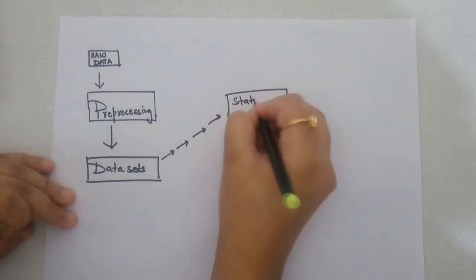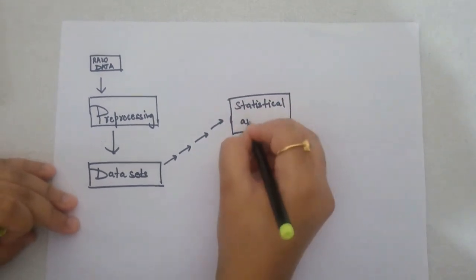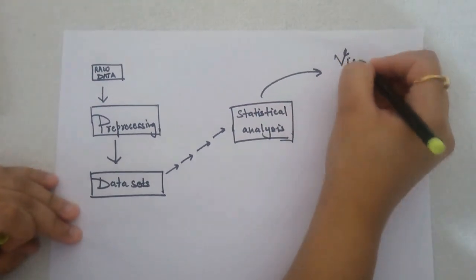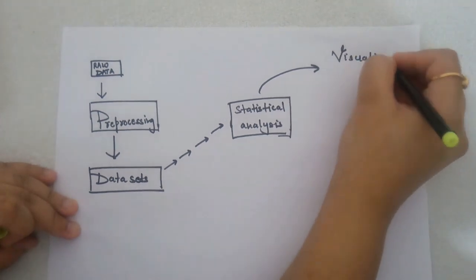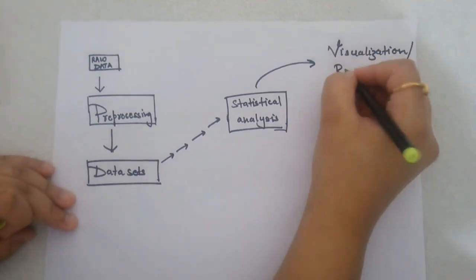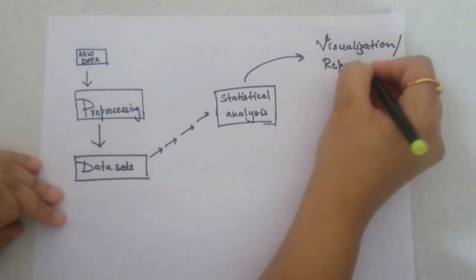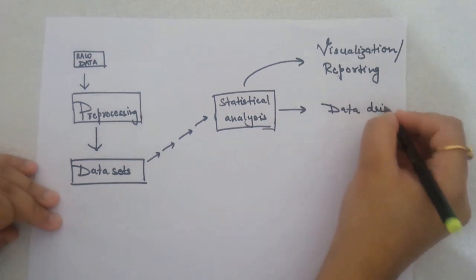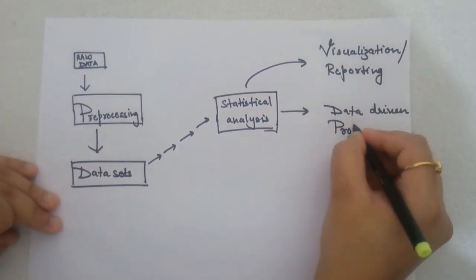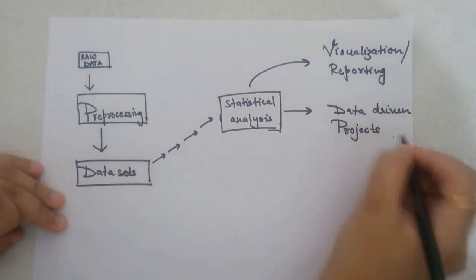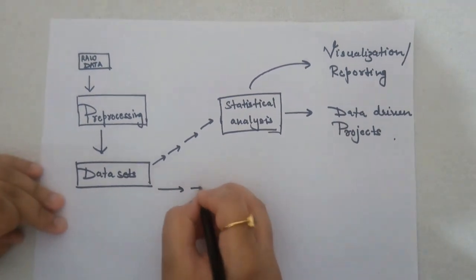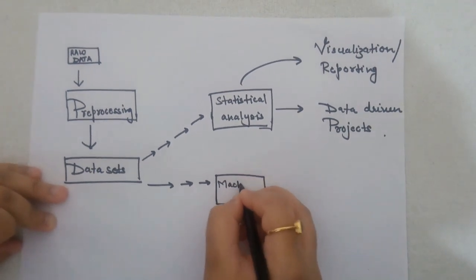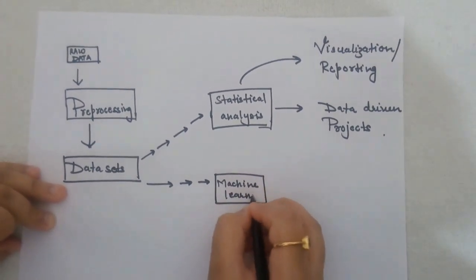These datasets are then given to a statistical model for statistical analysis, which is also done by data scientists. They then visualize the results via dashboards and customized charts, and they send these reports to the business head. All of this process combined forms a data-driven project. One additional aspect is that these datasets can also be given to a machine learning model.